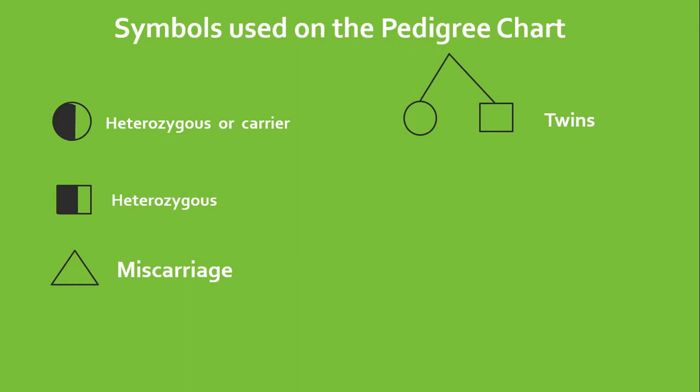There is also a symbol for twins and this is represented by the circle or the square connected by an inverted V. Then there is also room for adaptation and the adopted child is represented by a circle between square brackets. The deceased is also represented on your pedigree chart and the deceased is represented using a circle with a line drawn straight through midway that circle.